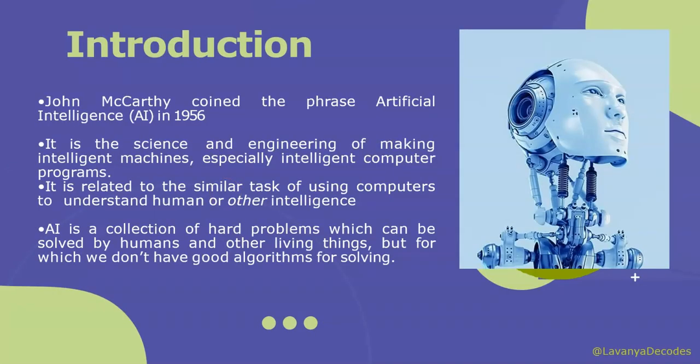The term artificial intelligence was first coined by John McCarthy in the year 1956. It is the science and engineering of making intelligent machines, especially intelligent computer programs. In other words, it is a study of how to make computers do things which people do better — meaning it is a combination of machine plus human intelligence.